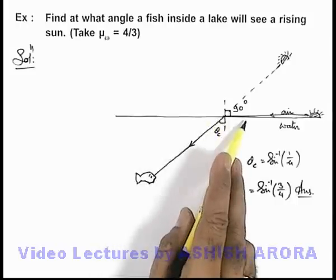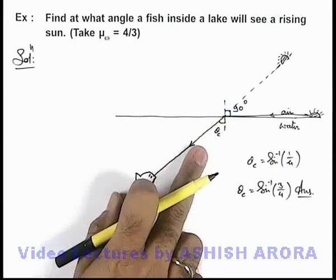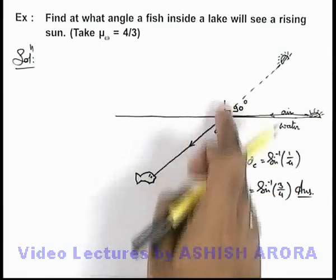With respect to horizon, the fish will see that sun is rising at an angle sine inverse of 3 by 4 with respect to normal.